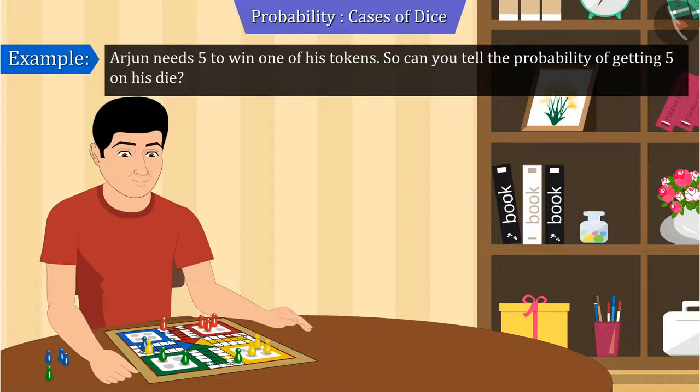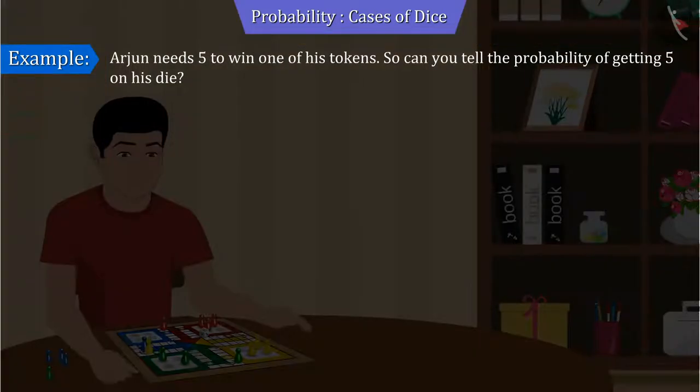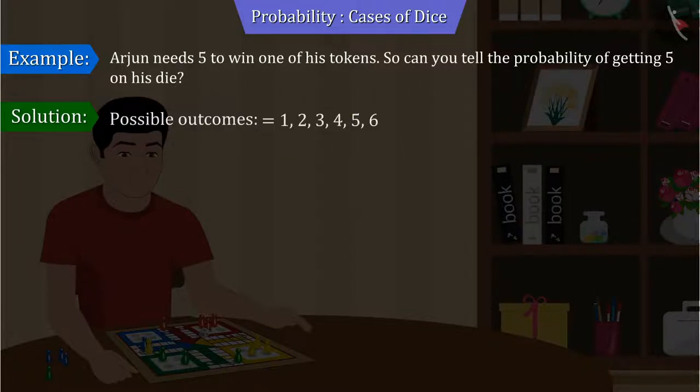Can you tell how many possible outcomes can we get while throwing a die? Absolutely right. On throwing a die, the outcome can be any number between 1 to 6. So the total number of possible outcomes will be 6.